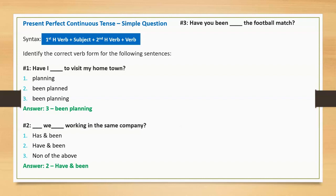Sentence three: 'Have you been blank the football match?' Option one: watch. Option two: watching. Option three: watched. Correct option: watching. Full sentence: 'Have you been watching the football match?'